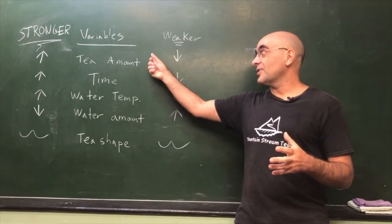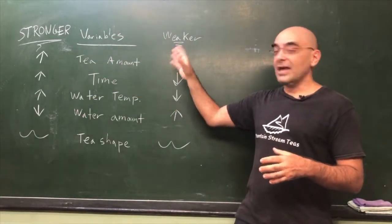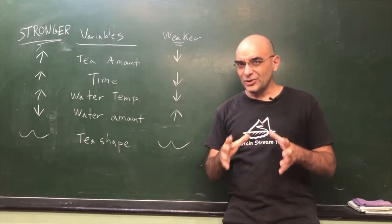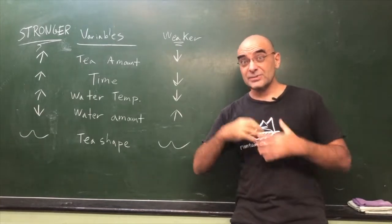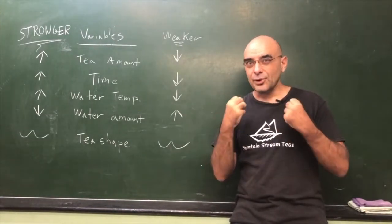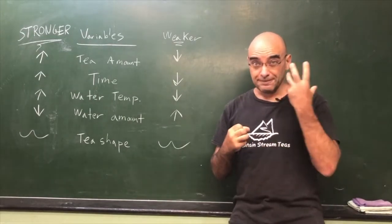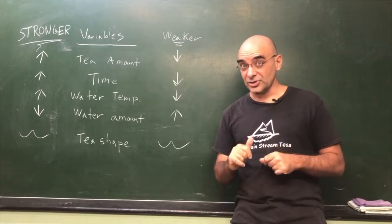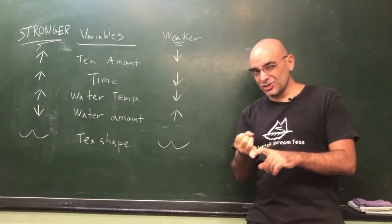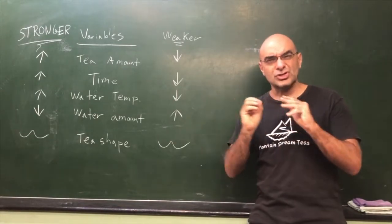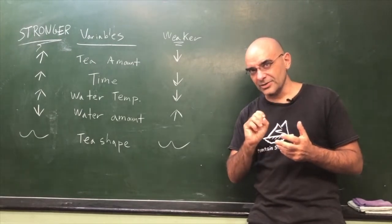And over here we got the tea shape, but we'll get to that in a minute, because that's sort of the hardest one to really wrap your head around. Over here we got our variables. Over here we got stronger, over here we got weaker. Now I'm using those terms without putting value judgments on them. Stronger means more flavors in general, more bitterness, more astringency, more bite, but also maybe more aftertaste, more florals, more sweetness, things like that. Not a value judgment. Weaker usually means less bitterness and astringency, more subtle floral sweetness, more flowing flavors. Again, not a value judgment.